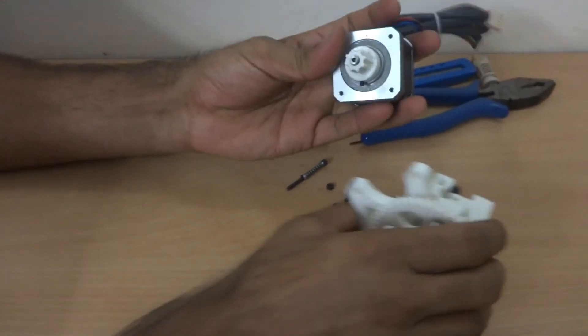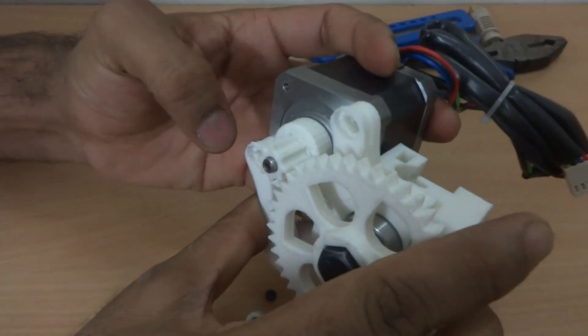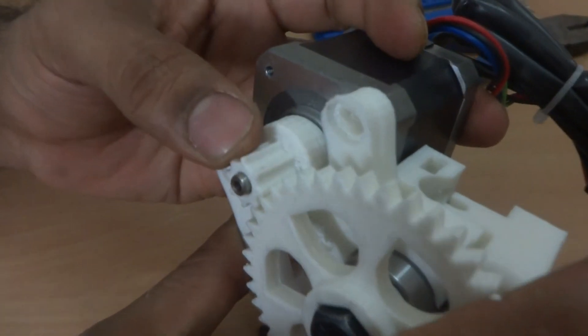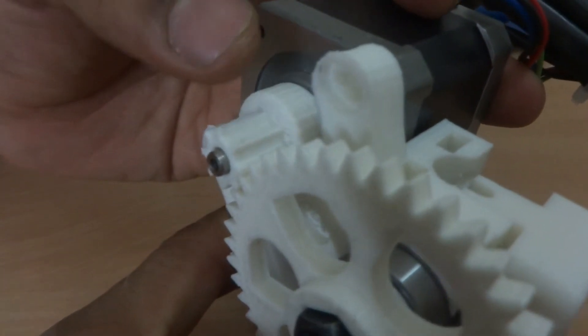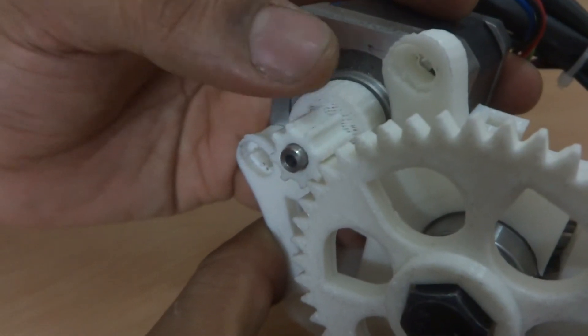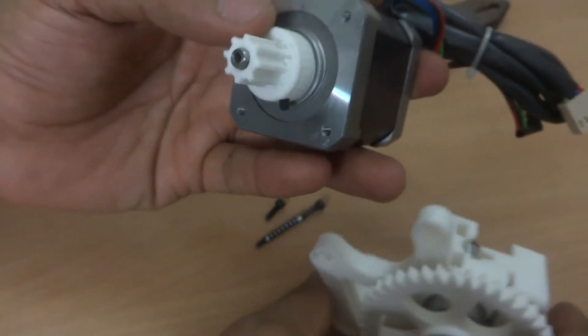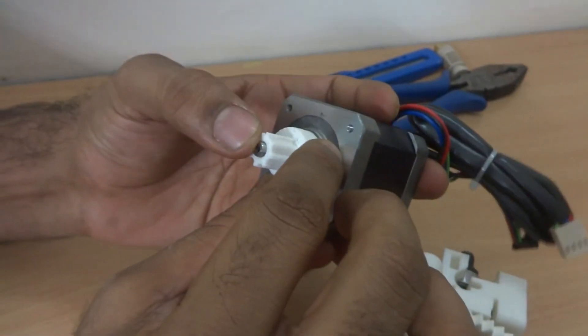Now before you install the motor, you need to check that there should be no backlash and the gear should fit perfectly. So here the gears are fitting perfectly. So we will just tighten this smaller gear over here.